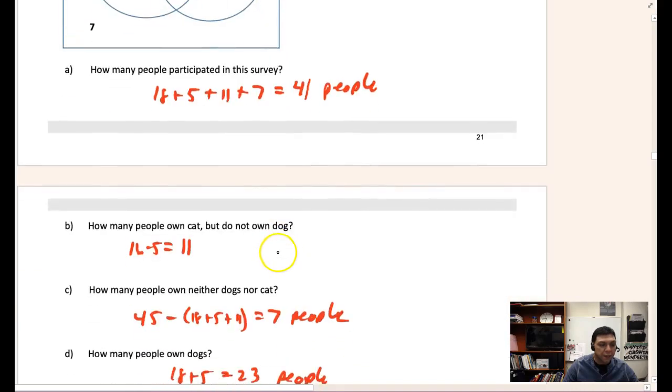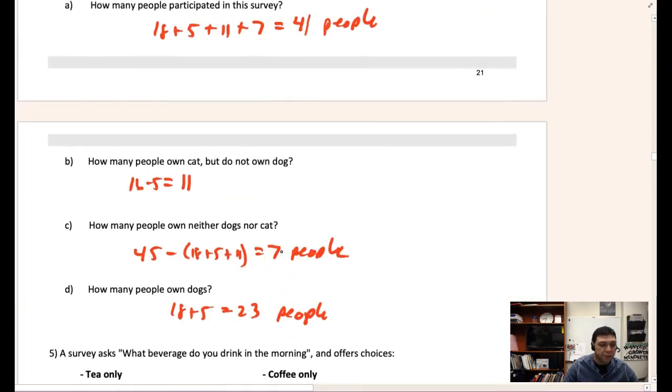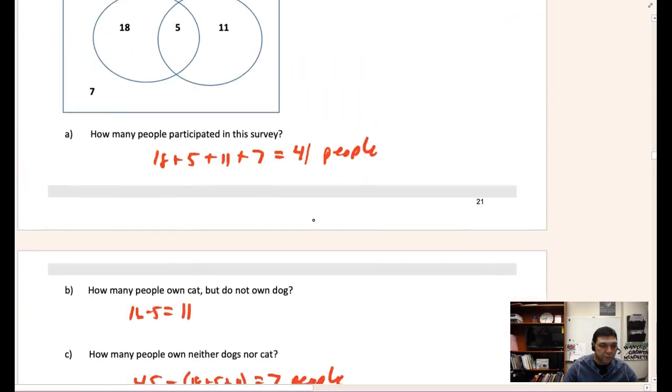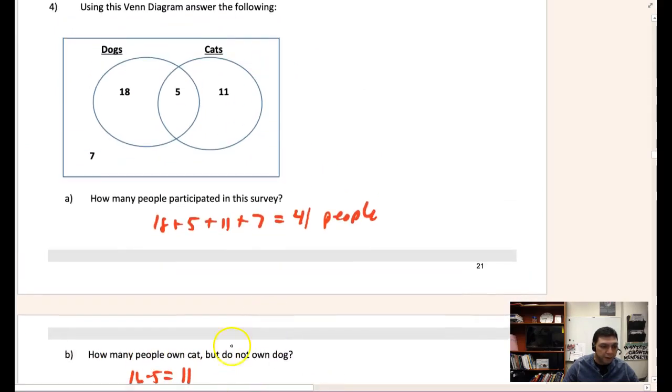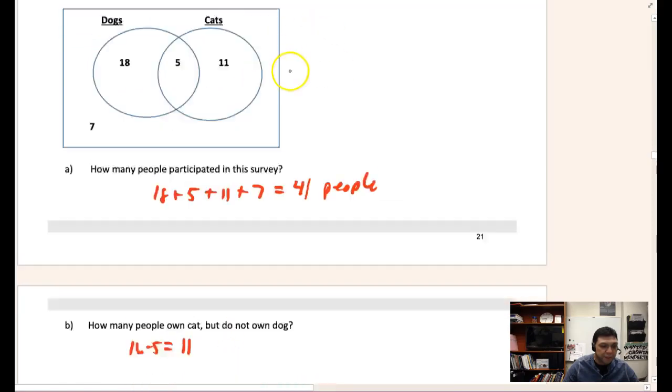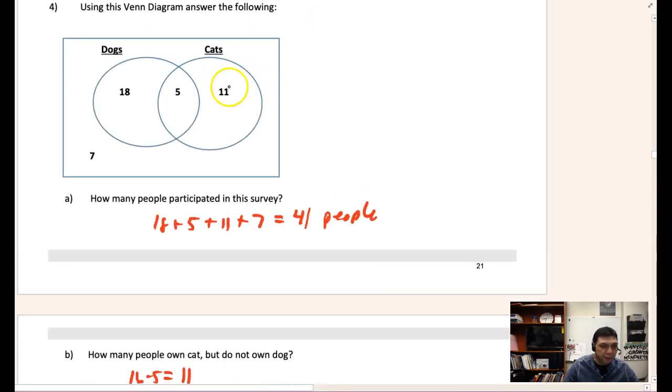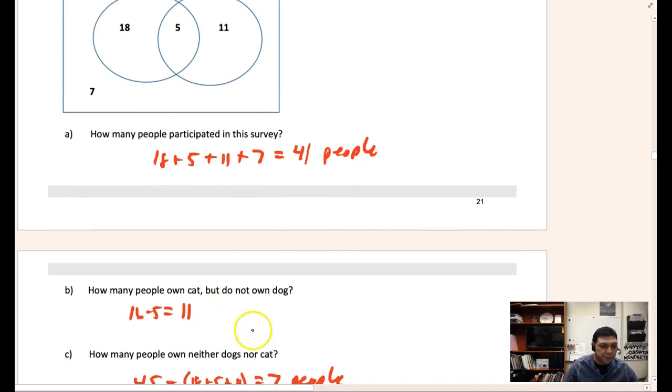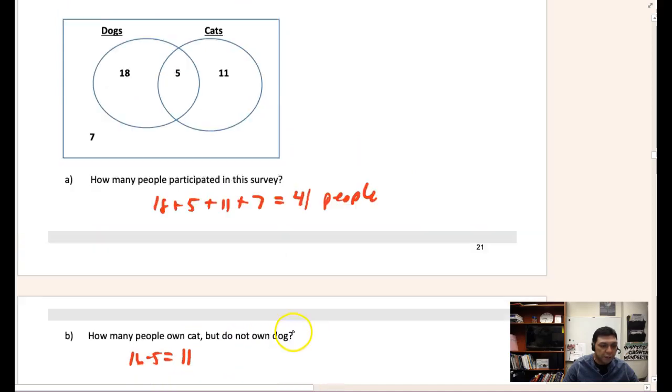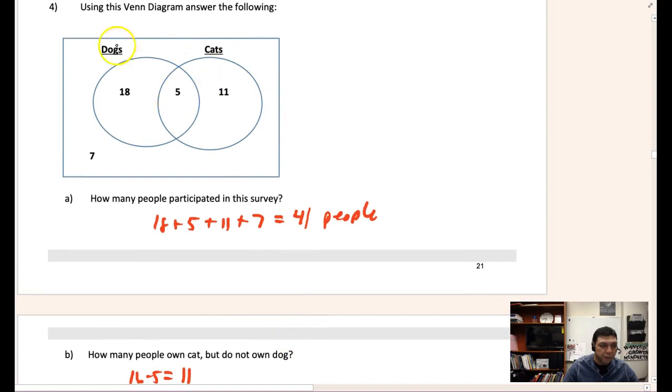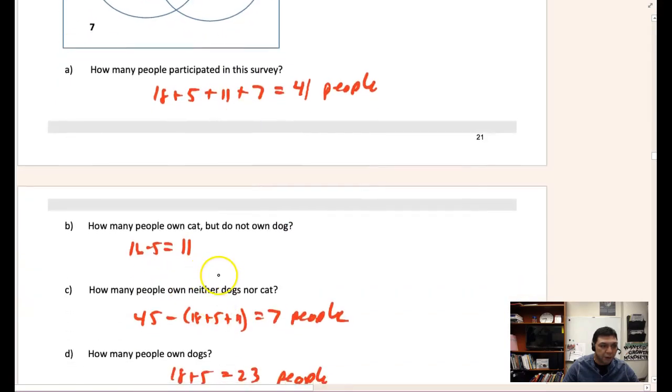And then we can answer the rest of those questions. How many people own a cat but do not own a dog? Look at my math there - 16 minus 5 is 11. That 11 comes from this area right here that I'm highlighting and circling here, because 16 people like cats but do not own a dog. Notice those 5 people own cats and dogs, so I needed to subtract that to get 11.